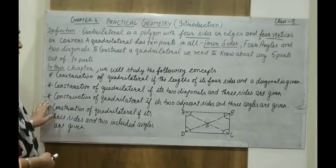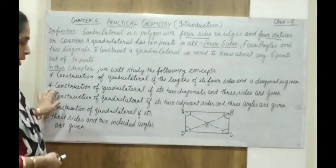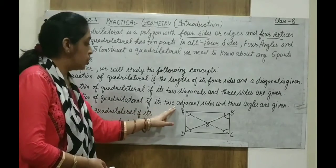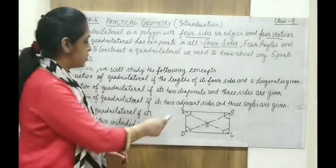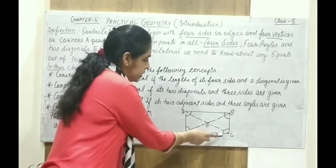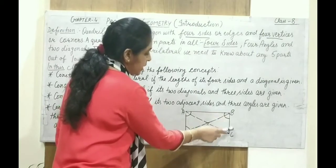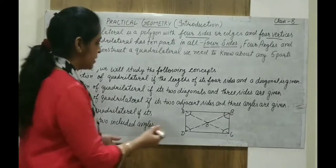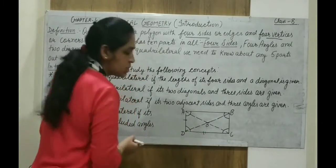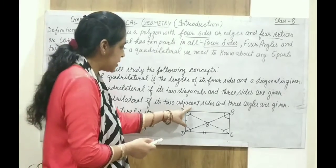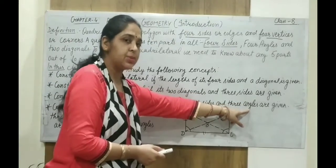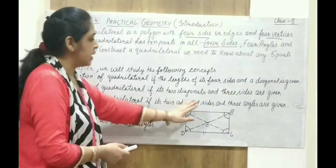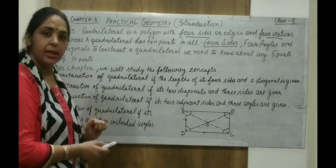The third condition is construction of a quadrilateral if two adjacent sides and three angles are given. Adjacent sides means sides like AD and DC, or AB and BC. So any two adjacent sides, and any three angles are given. If this condition is satisfied, then we can construct a quadrilateral.